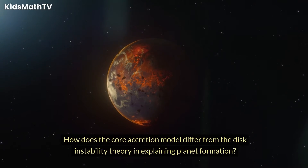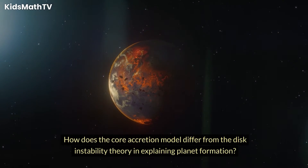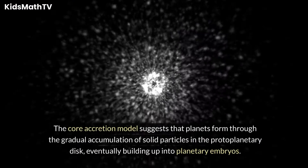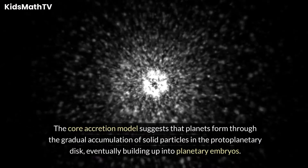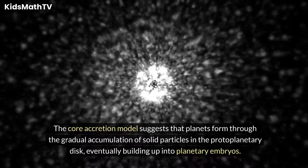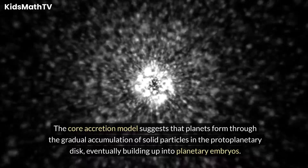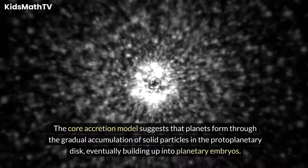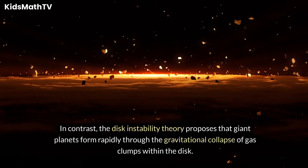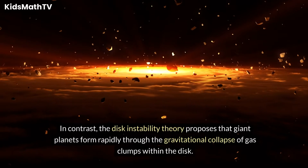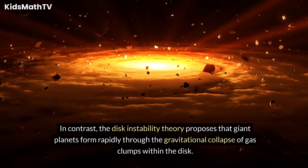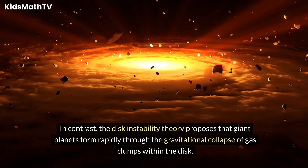The core accretion model suggests that planets form through the gradual accumulation of solid particles in the protoplanetary disk, eventually building up into planetary embryos. In contrast, the disk instability theory proposes that giant planets form rapidly through the gravitational collapse of gas clumps within the disk.